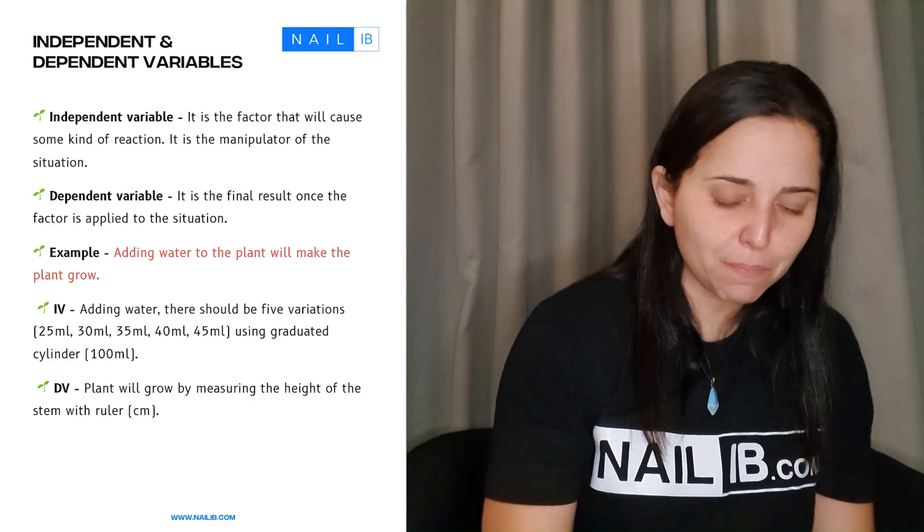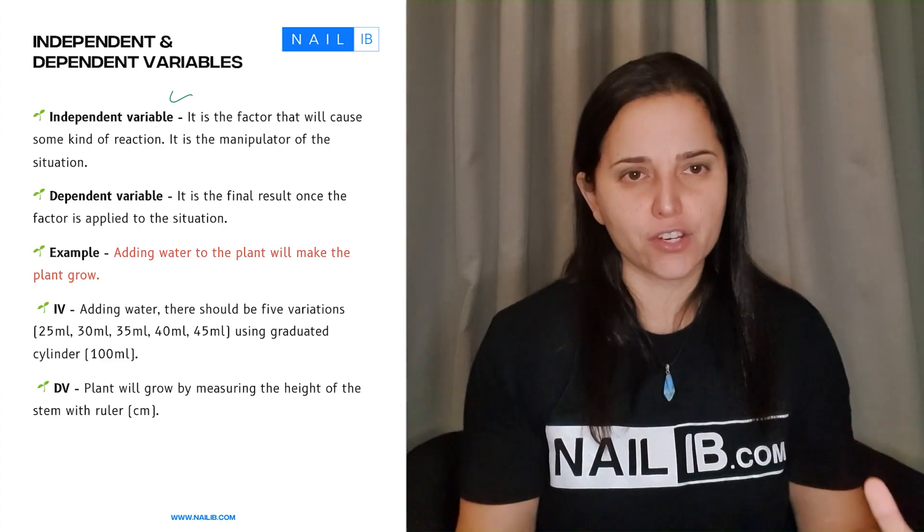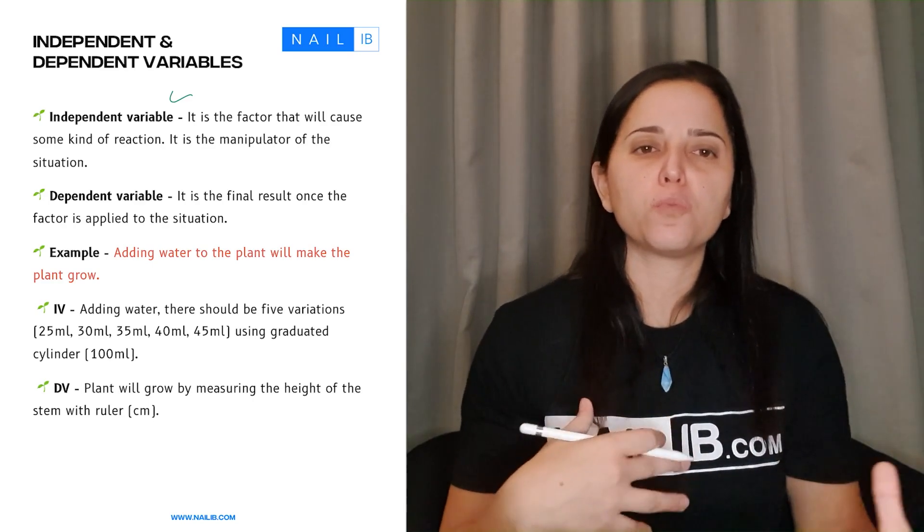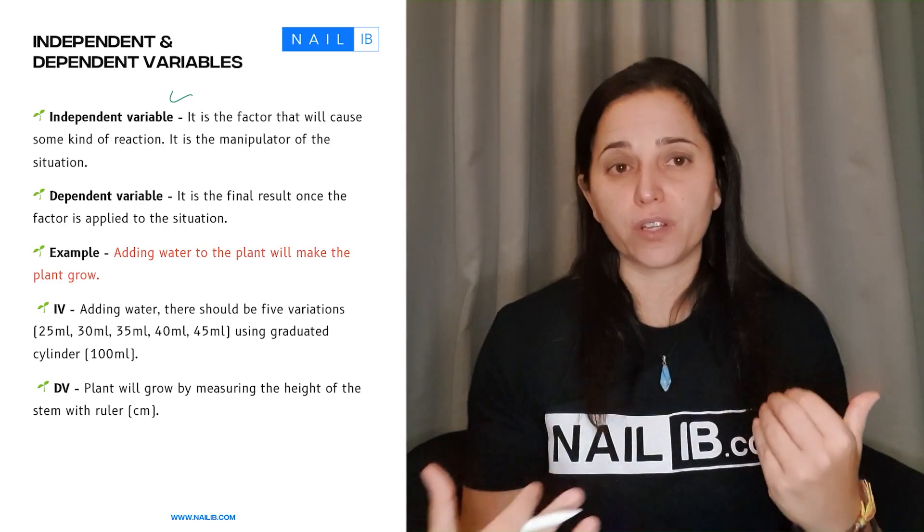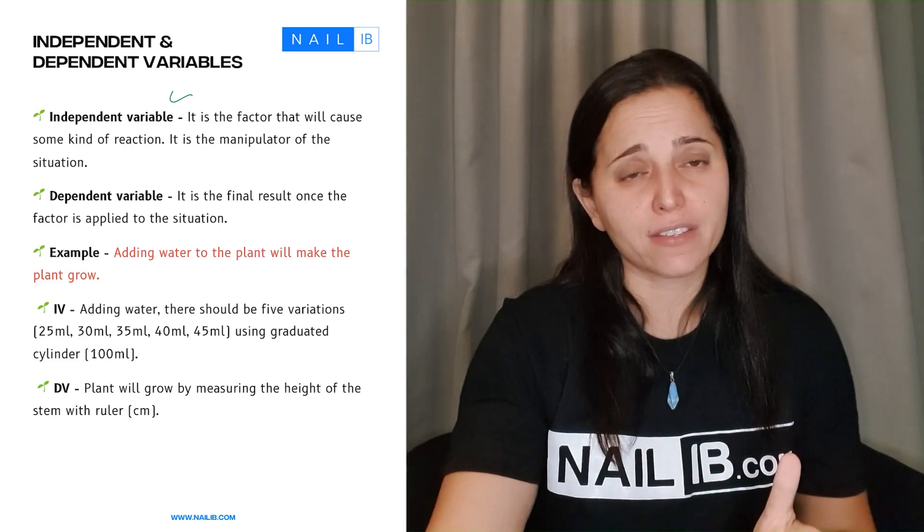Just a reminder that the independent variable is the one that is causing the reaction. So this is the one that you're manipulating. A lot of kids get confused between what is the one being manipulated and what is the one in response. So think of an independent variable as the one that is causing some kind of an effect.